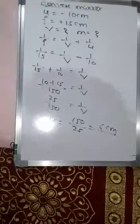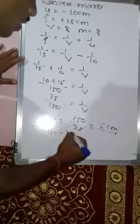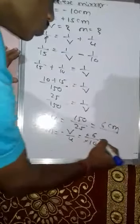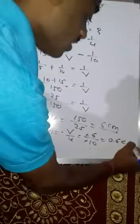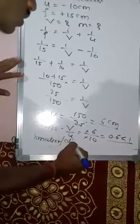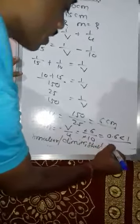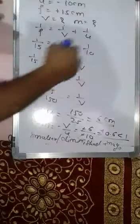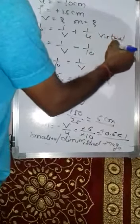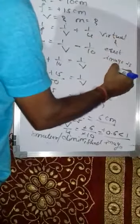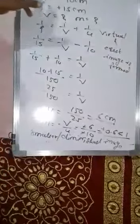Magnification also changes. m equals minus v upon u, that is minus 6 upon minus 10, giving 0.6. This value is less than 1, which means a smaller or diminished image is formed. And since the value is positive, it is a virtual and erect image. So for convex mirror a diminished, virtual and erect image is formed.